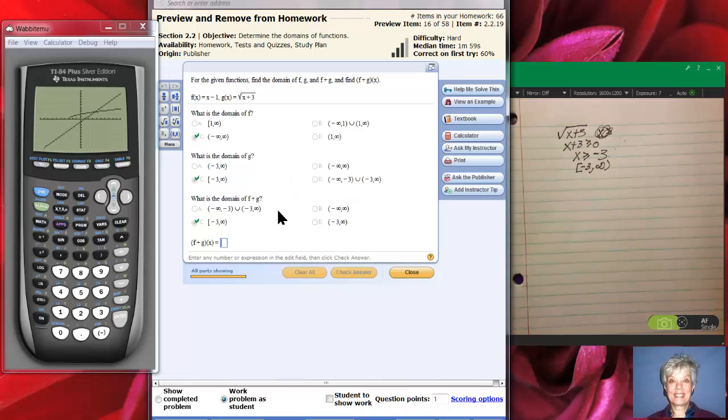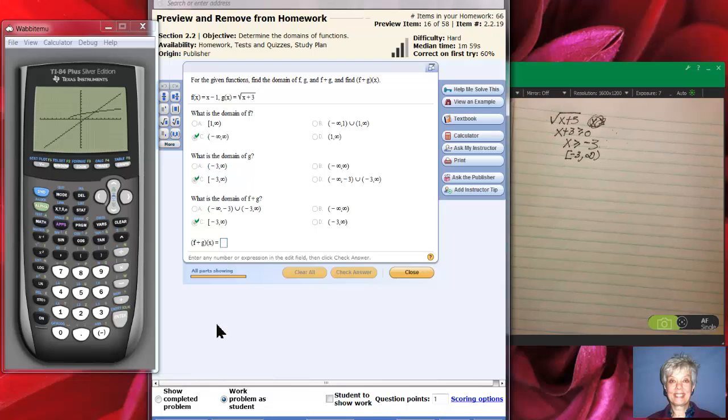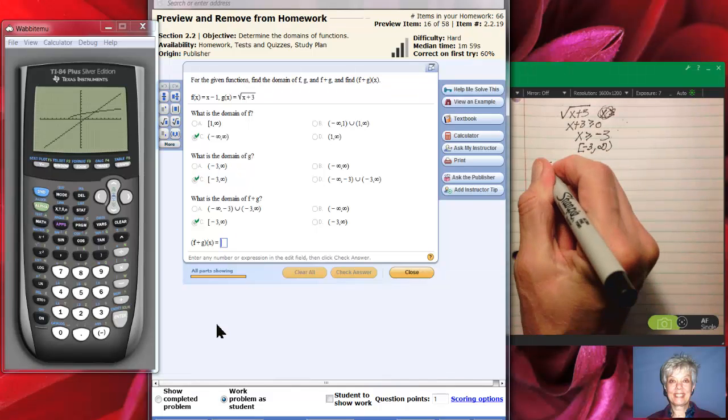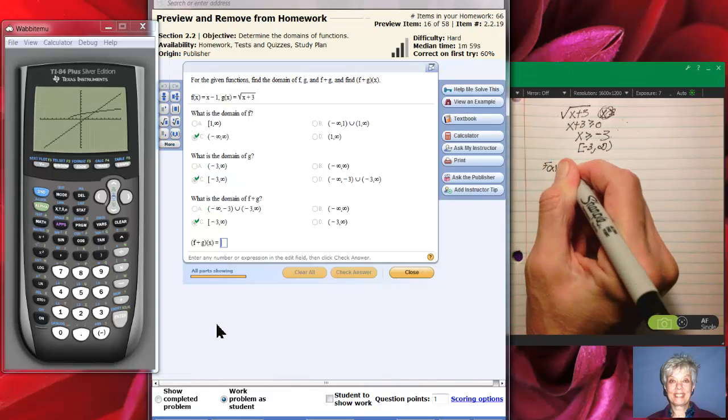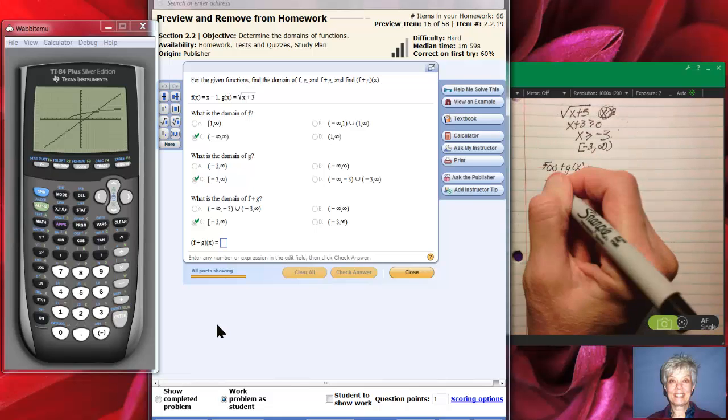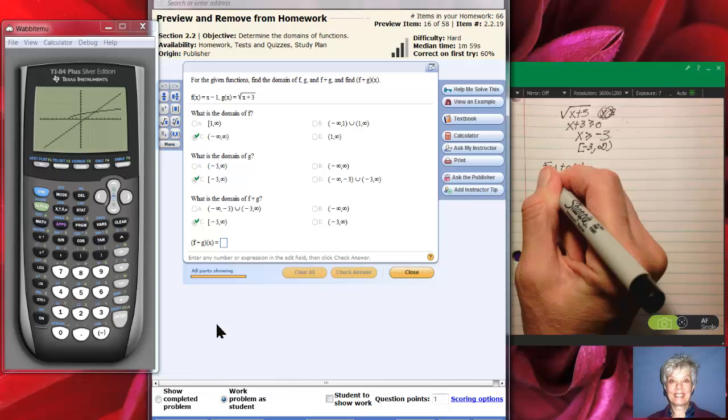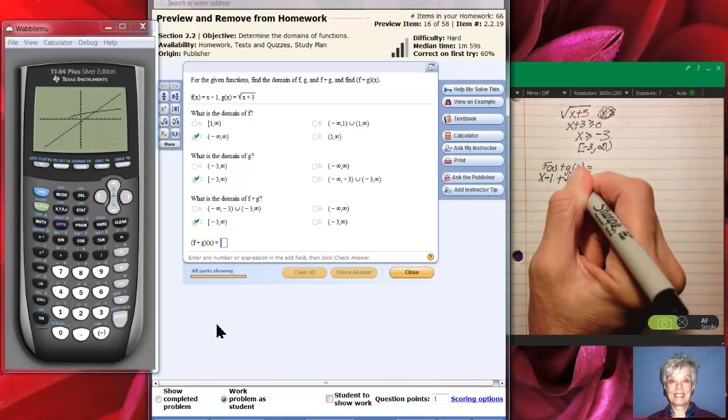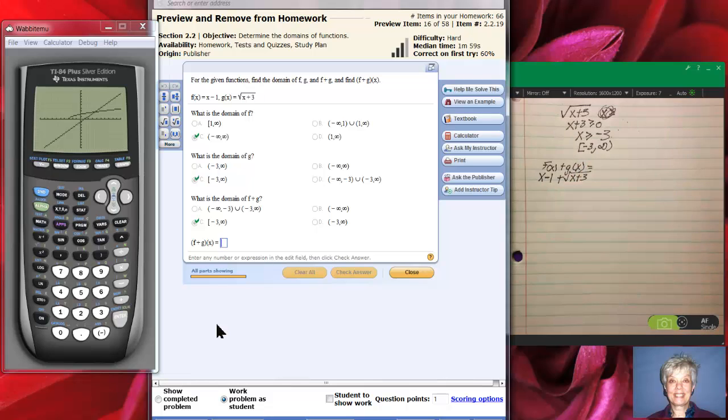Fantastic. Now we're being asked what is f plus g of x. In other words we're going to be adding f of x and g of x. So f of x plus g of x is going to equal x minus 1 plus the square root of x plus 3. And that's that.